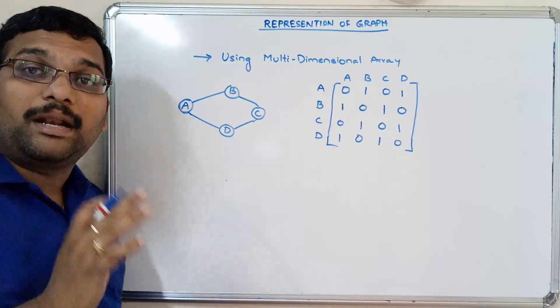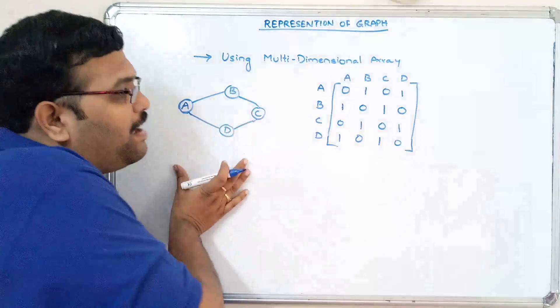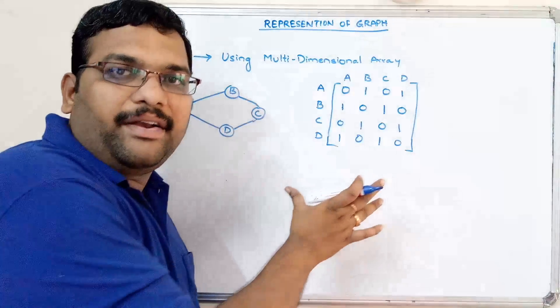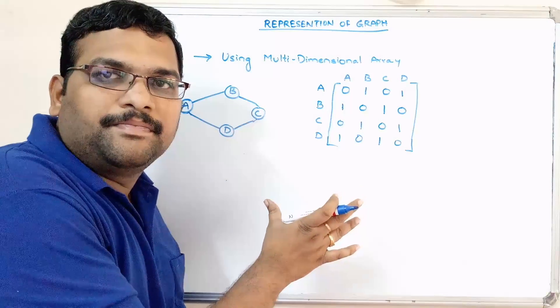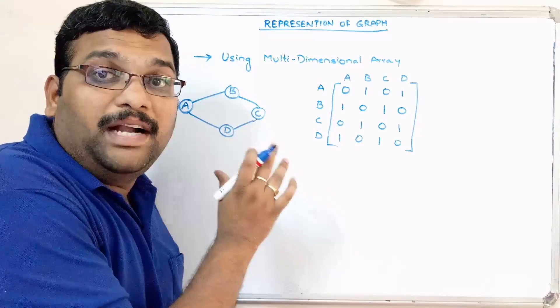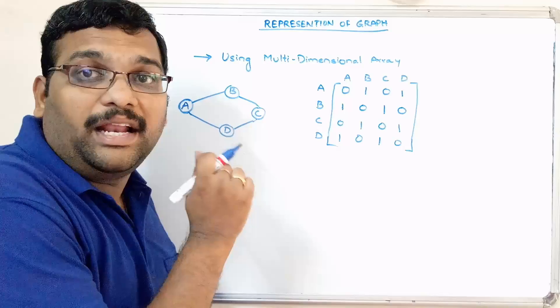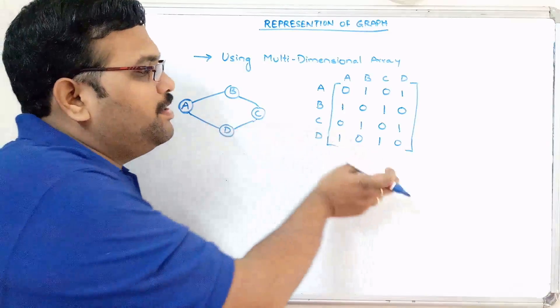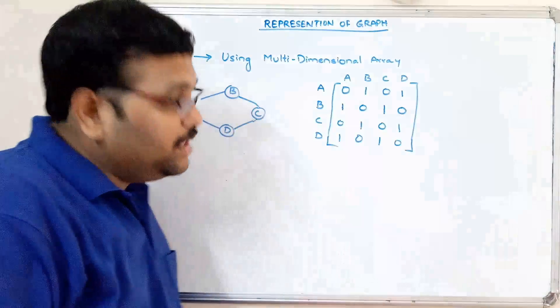So this is how we can represent a graph in an adjacency matrix — that means a multidimensional array. By using the multidimensional array, we can represent any graph.